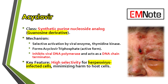Acyclovir is a synthetic guanosine analog, and its elegant mechanism of action lies in its selective activation. Unlike a broad-spectrum antiviral that might indiscriminately affect host cells, acyclovir remains largely inert until it encounters a virally infected cell. Inside this cell, the viral enzyme thymidine kinase, which is unique to herpes viruses, phosphorylates acyclovir into its monophosphate form. This initial phosphorylation is the key rate-limiting step and the basis for the drug's remarkable selectivity.